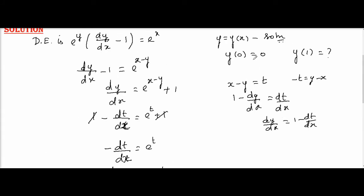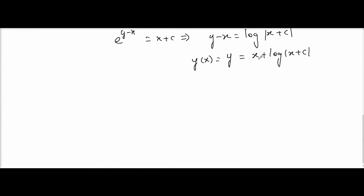Now, what are the conditions given? y of 0 equal to 0. When we substitute x equals 0, y of 0 equal to 0 implies 0 plus log 0 plus c equal 0. That is, log c equal 0 means c equal 1. Therefore, my solution becomes y equal to x plus log of x plus 1.